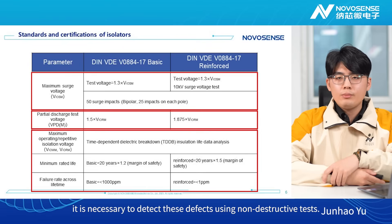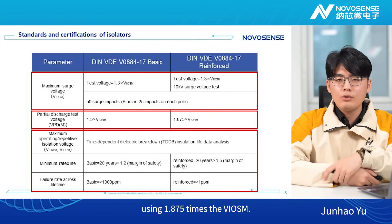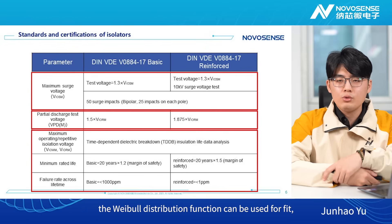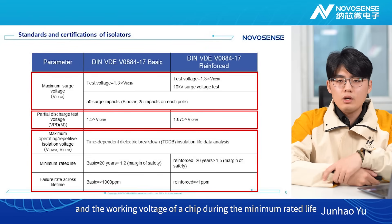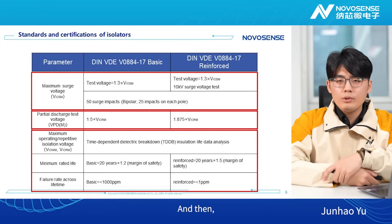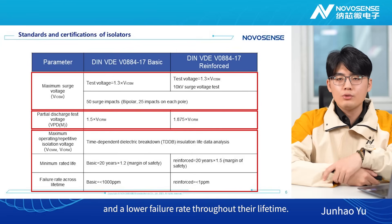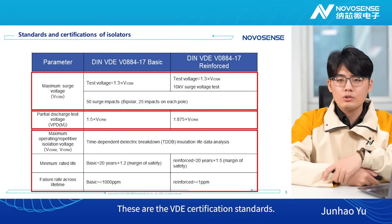Therefore, it is necessary to detect these defects using non-destructive tests. The basic isolation grade is tested using 1.5 times the VDE, while the reinforced isolation grade is tested using 1.875 times the VDE. Based on the operating life of ICs at different temperatures and voltages, the Weibull distribution function can be used for fit, and the working voltage of a chip during the minimum rated life and target life under a certain failure rate can be worked out. According to the requirements of VDE related coefficients, the VIORM can be obtained. From the VIORM data, it can be seen that the reinforced isolators have a longer service life and a lower failure rate throughout their lifetime. These are the VDE certification standards.